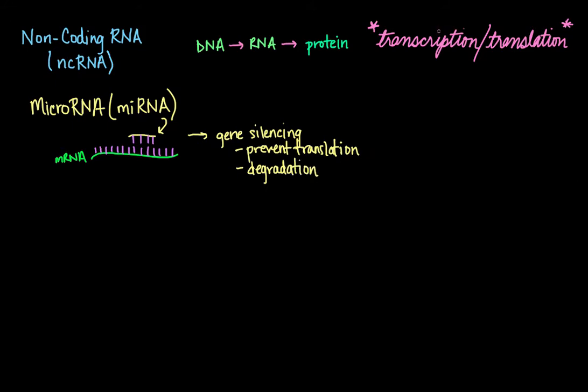The next set of non-coding RNAs that we'll be talking about are all involved in translation, the first of which is ribosomal RNA. Ribosomes are the cellular machinery used to translate mRNA into proteins, and it is made up of one type of RNA molecule, ribosomal RNA.